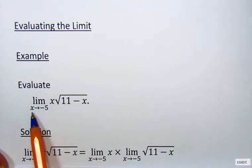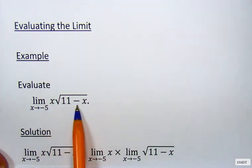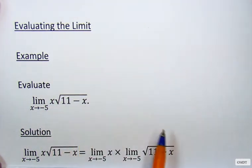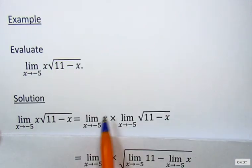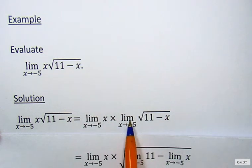Let's evaluate the limit as x approaches -5 of x times square root of 11 minus x. First, we break this problem down into limit as x approaches -5 of x, times limit as x approaches -5